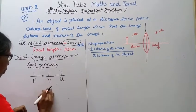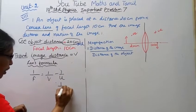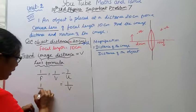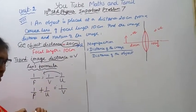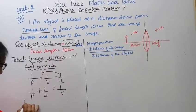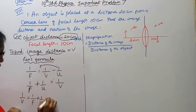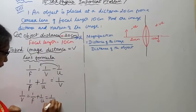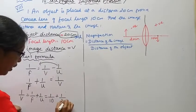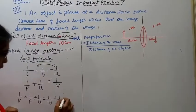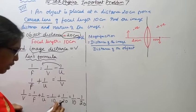In the formula we apply: 1/v = 1/f + 1/u. So 1/v = 1/10 + 1/(−20). That gives us 1/10 − 1/20, using LCM of 20.